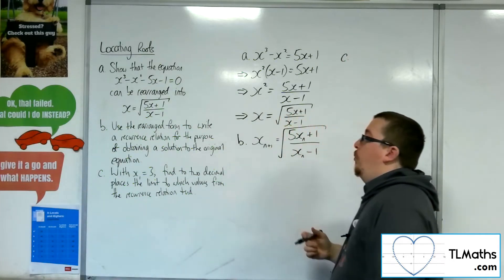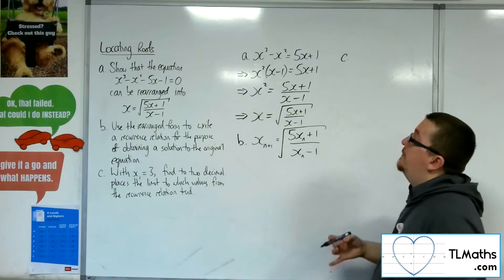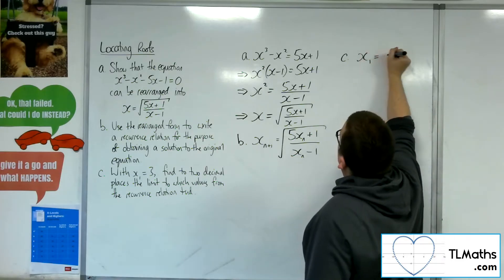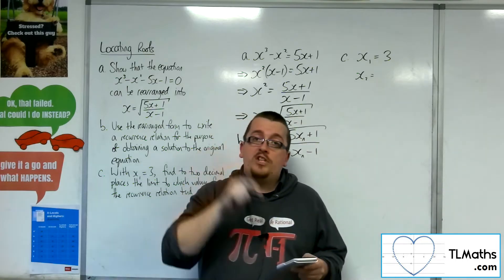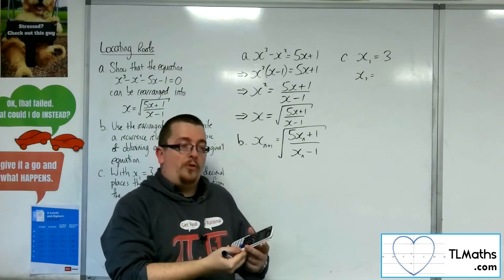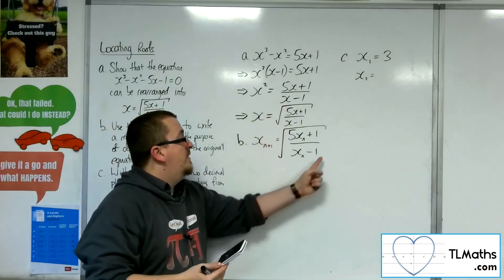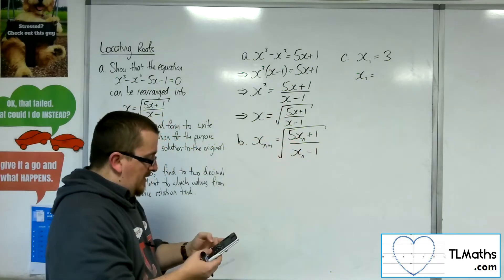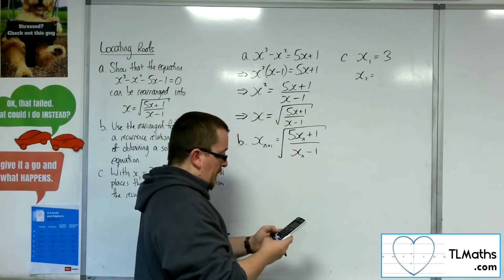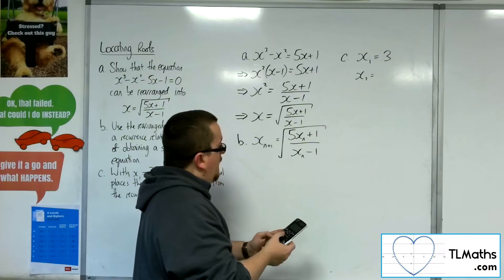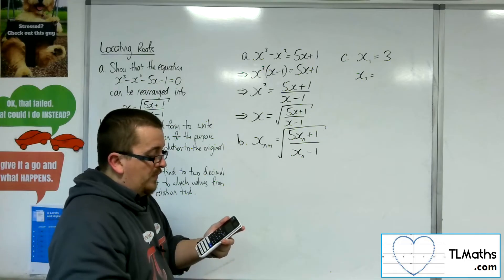With x₁ equals 3, find to two decimal places the limit to which the values in the recurrence relation tend. With x₁ equals 3, you should first type 3 into your calculator and press equals, which puts 3 in as your answer key. Then type this in with the x_n's as the answer key: square root, use the fraction button, 5 lots of the answer key plus 1 in the numerator, and the answer key take away 1 in the denominator.